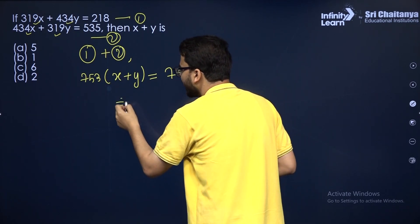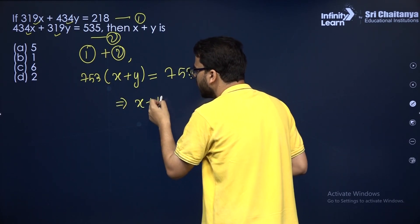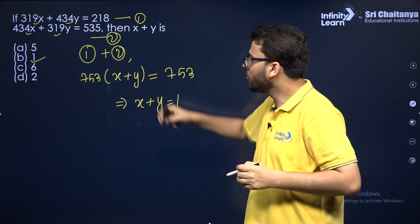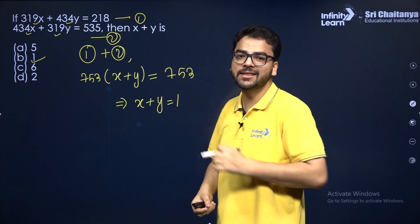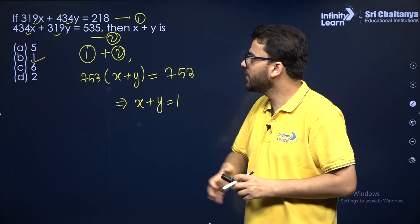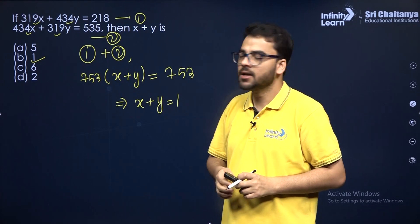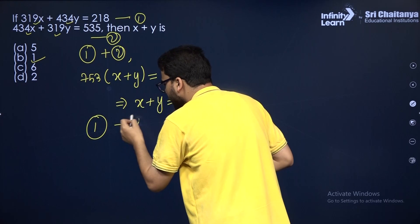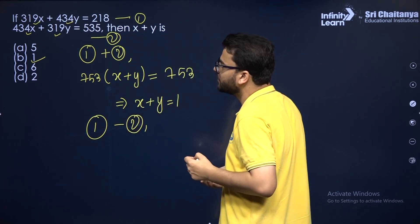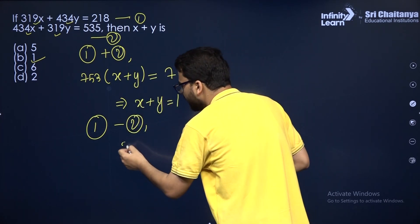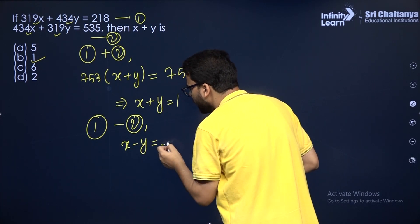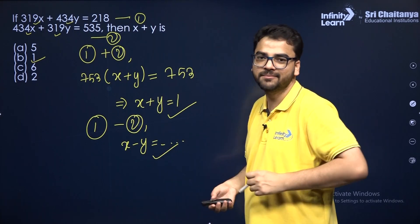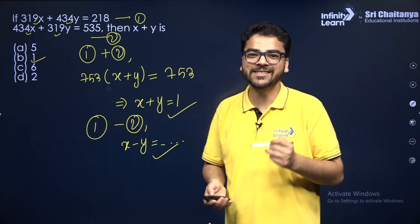So can we not directly say that x plus y is equal to 1? Out of the given options, option B is correct. You don't need to solve specifically in this question. But if it is given to solve the pair, once you have added, the second step would be subtraction — equation 1 minus 2 — to get the value of x minus y. Then you can easily solve for x and y. I hope it is clear.